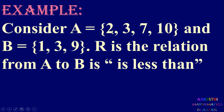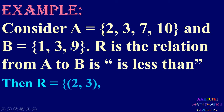Let me see one example. Consider set A equal to {2, 3, 7, 10} and B equal to {1, 3, 9}, and R is the relation from A to B defined as 'is less than'. We consider 2 and 1: 2 less than 1 is not possible. But 2 less than 3 is correct, so the first ordered pair is (2, 3). Then 2 less than 9 is true, so we write (2, 9).